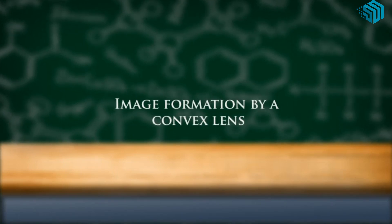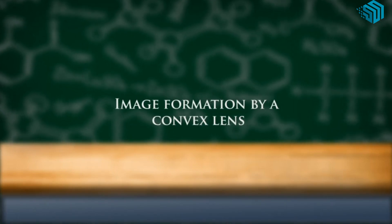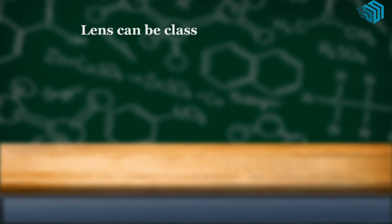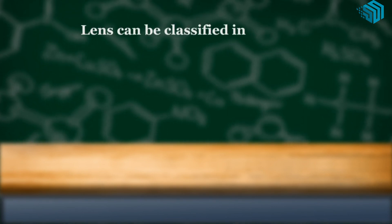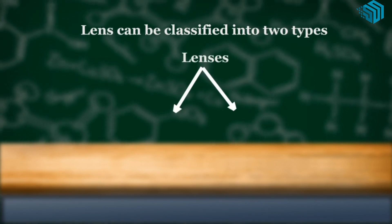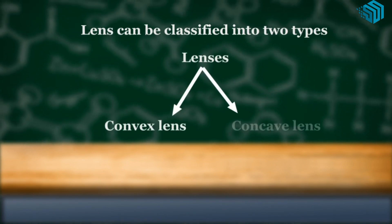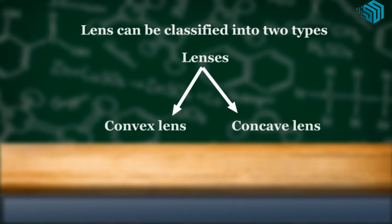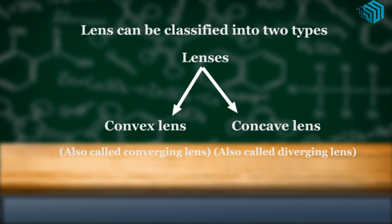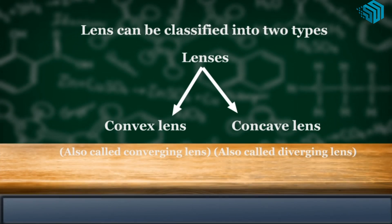Let us learn about image formation by convex lens. Lenses can be classified into two types: convex lens, which is also called converging lens, and concave lens, which is also called diverging lens.